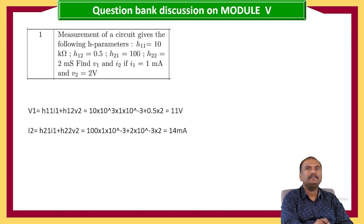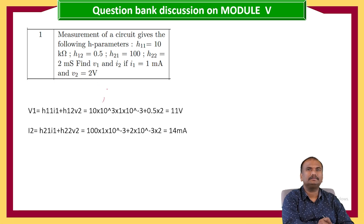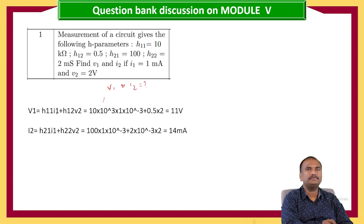With this H parameters data, we need to calculate V1 and I2. V1 equals H11 times I1 plus H12 times V2, and I2 equals H21 times I1 plus H22 times V2.